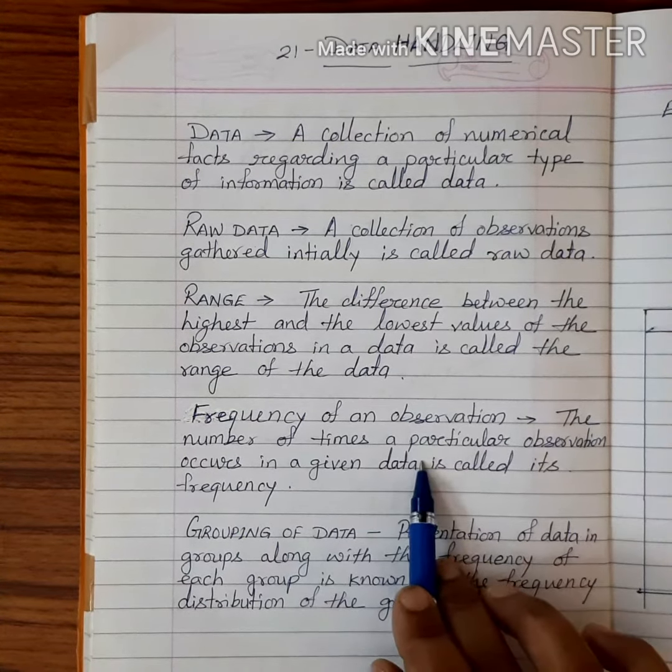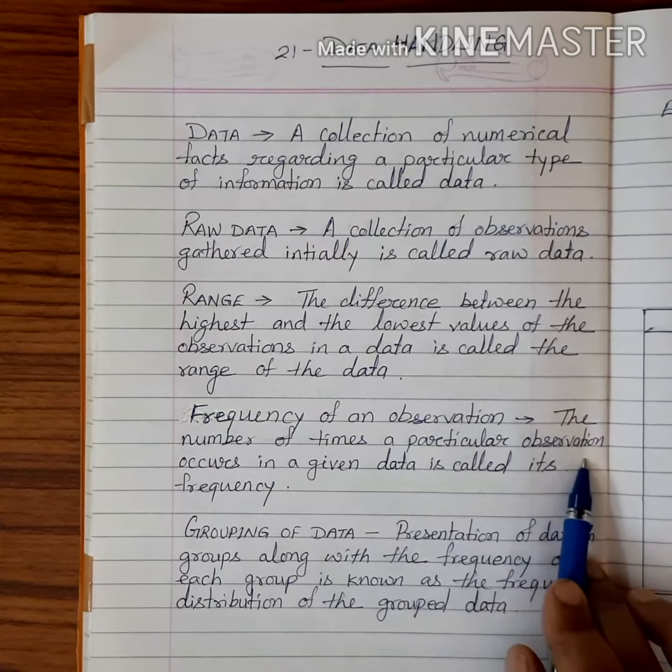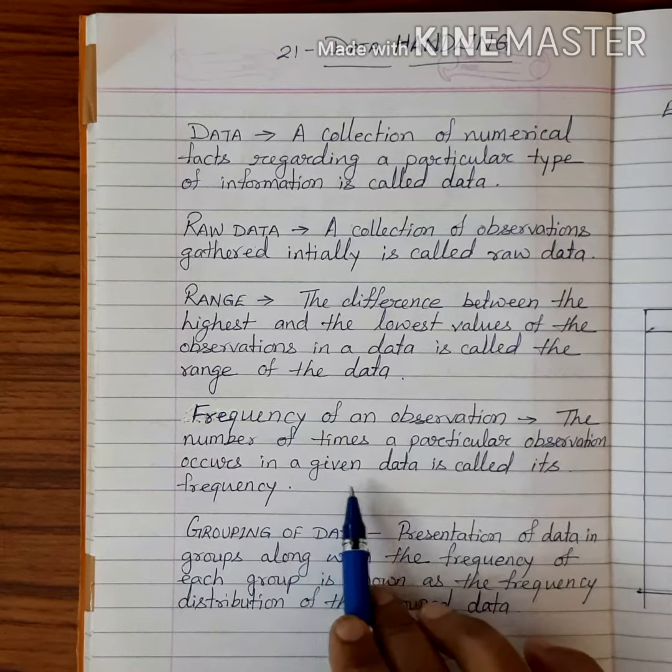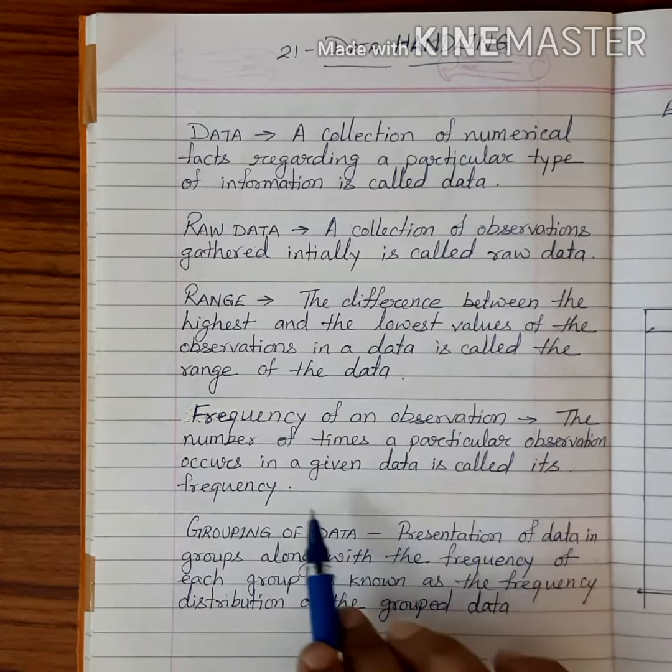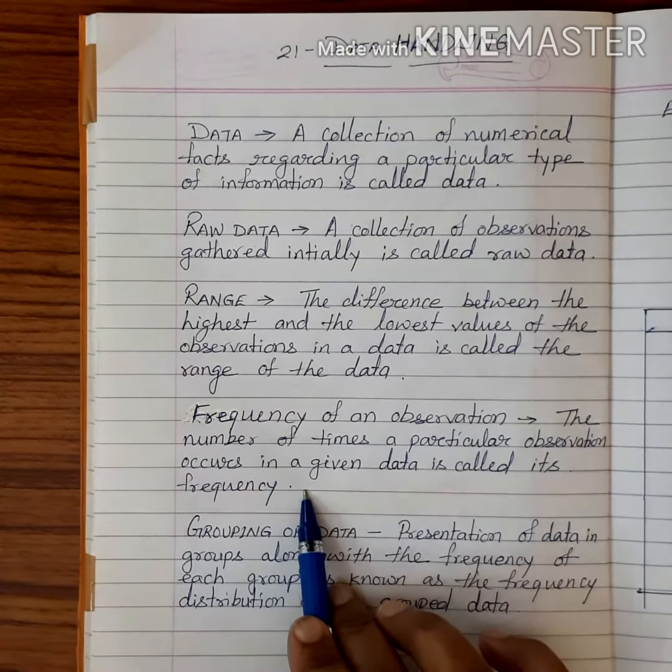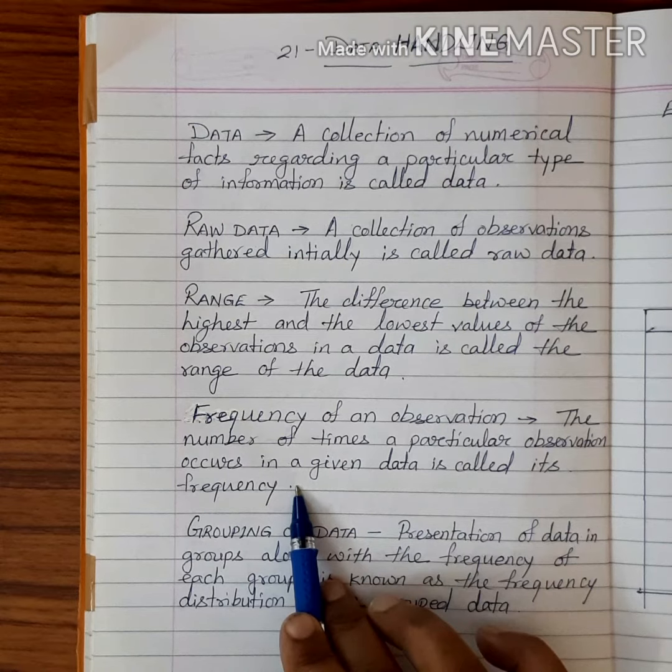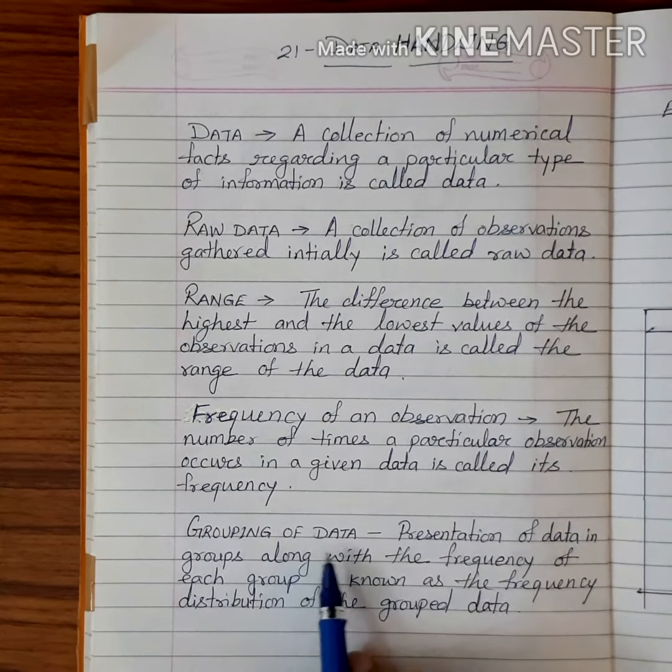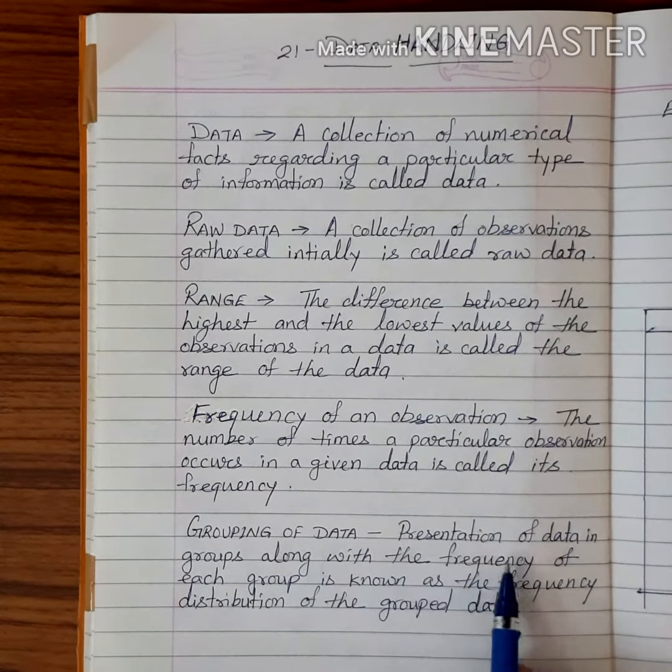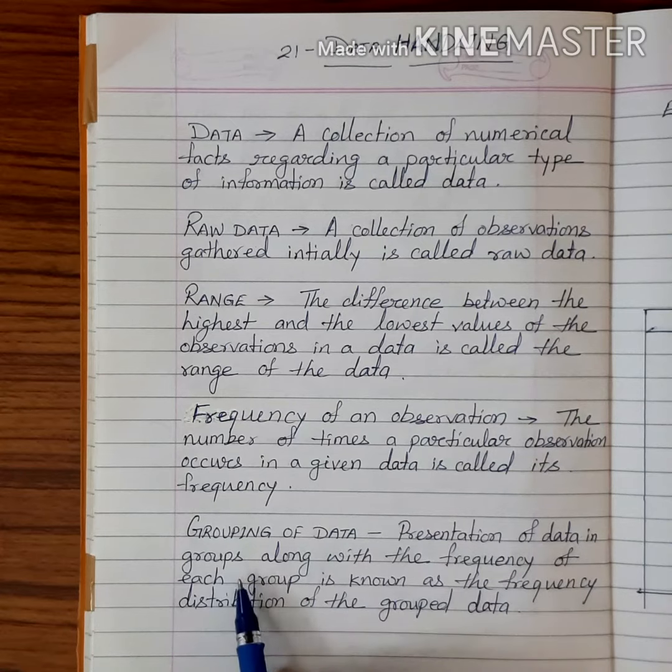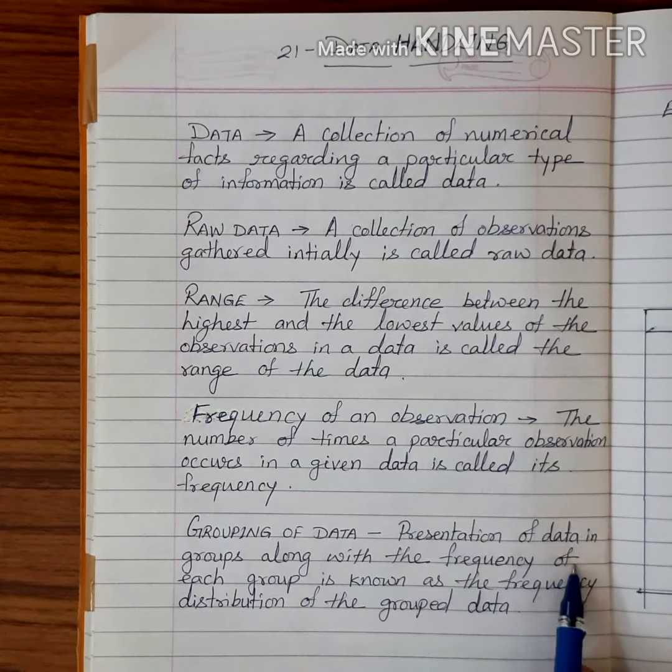Next point, frequency of an observation: the number of times a particular observation occurs in a given data is called its frequency. How many times any data comes, it is called the frequency.